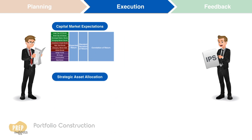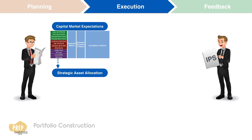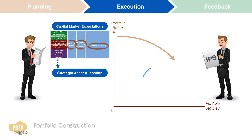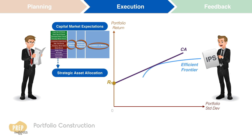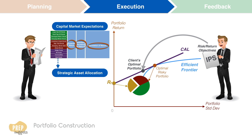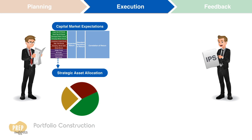Once the capital market expectations have been set, we can proceed to determining the strategic asset allocation. Based on the expected returns, standard deviation of returns, and the correlation of returns of the various asset classes, an efficient frontier can be constructed using a computer program. With this, you can determine the capital allocation line and the optimal risky portfolio for your client. By combining the risk and return objectives from the IPS, you can identify the portfolio which best meets the risk and return requirements of your client. The asset allocation for this optimal portfolio is the strategic asset allocation for your client's portfolio.